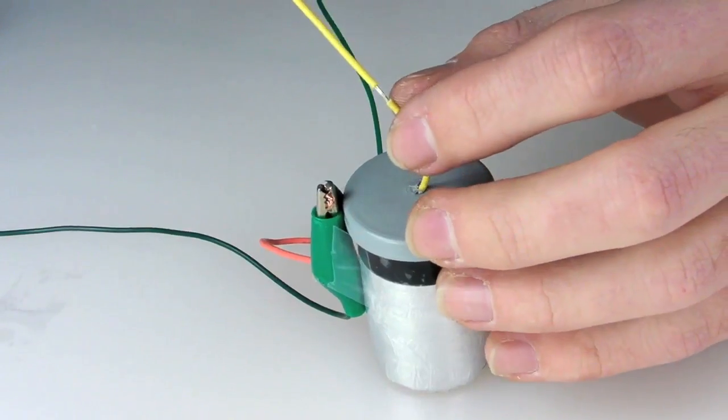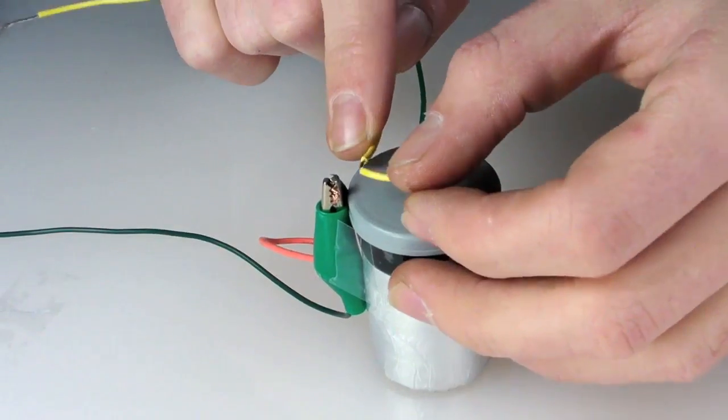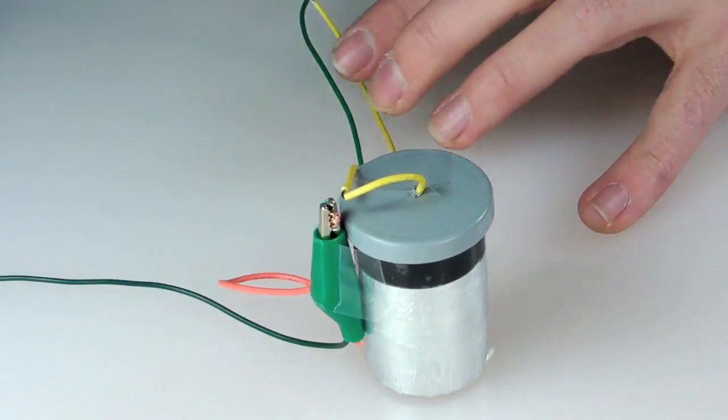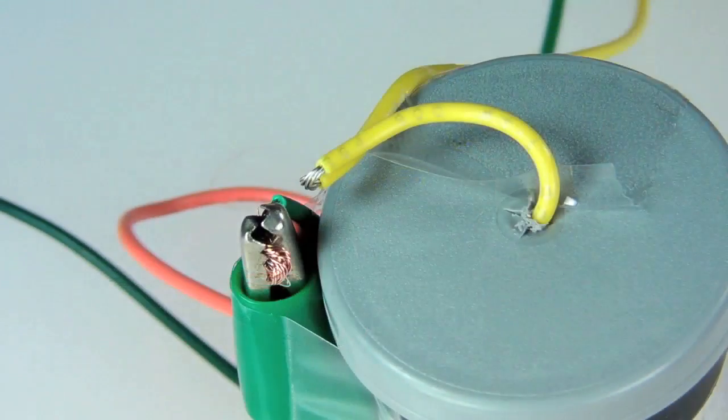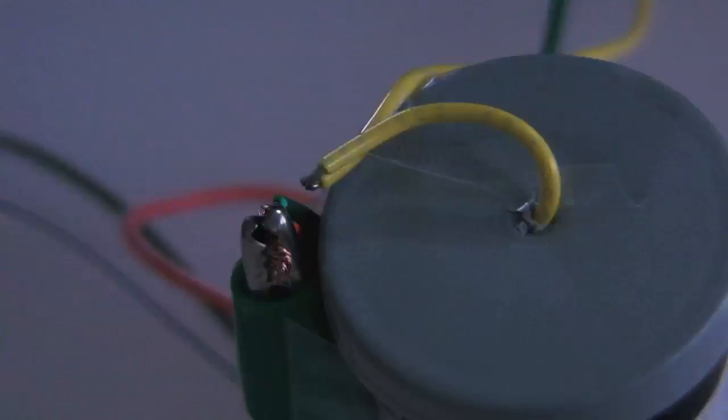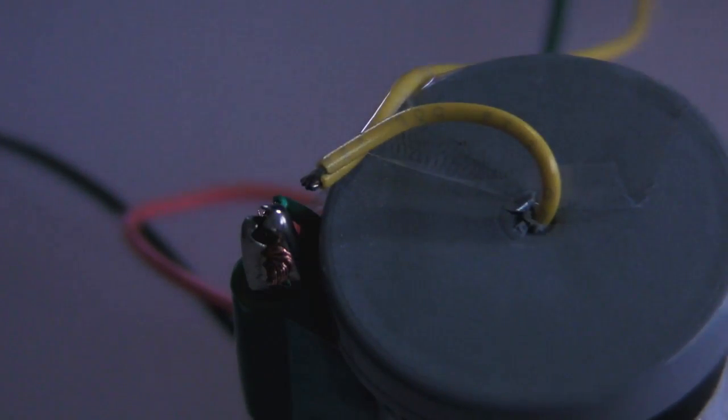I exposed a section of the center conductor and brought it close to our connection to ground. I taped them in place. Once the charge is strong enough, electrons should jump across this spark gap. And jump they do.